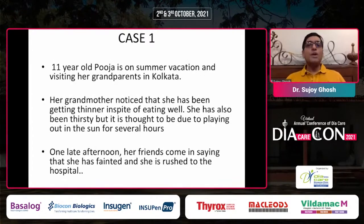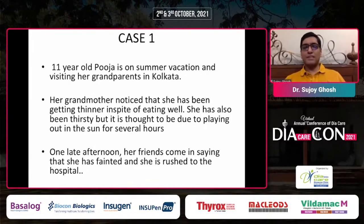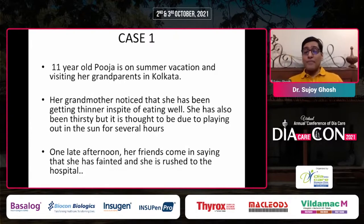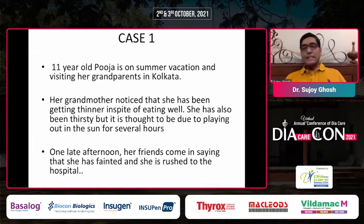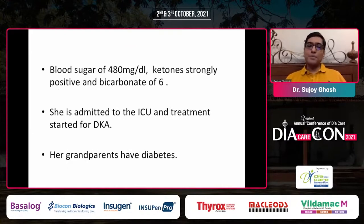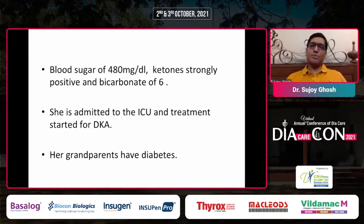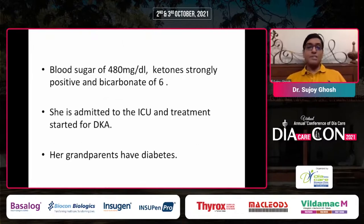Case 1: Pooja is an 11-year-old girl who came on summer vacation to her grandparents in Kolkata. Her grandmother noticed she was getting thinner in spite of eating well and was thirsty. One afternoon she fainted, was rushed to the hospital, where blood glucose was very high, ketones strongly positive, bicarbonates low — she was admitted to the ICU and treatment started for ketoacidosis. Her parents have diabetes.